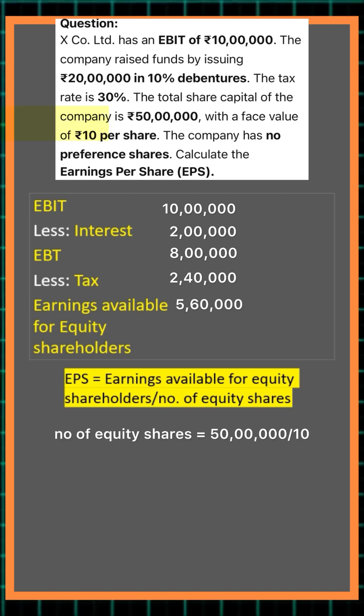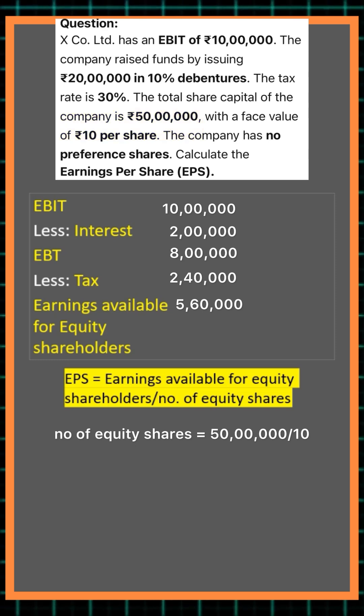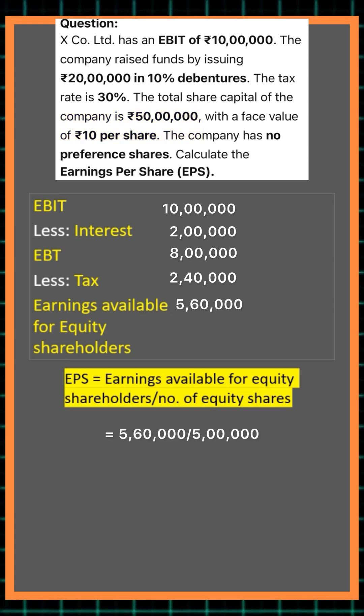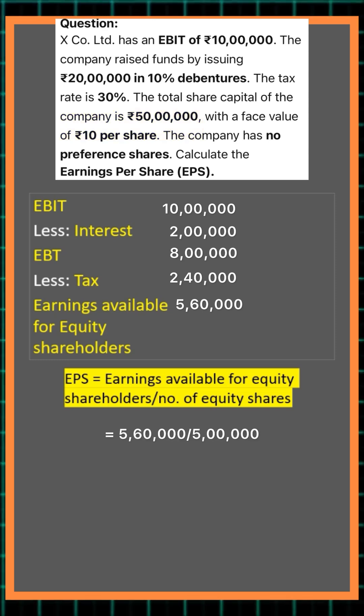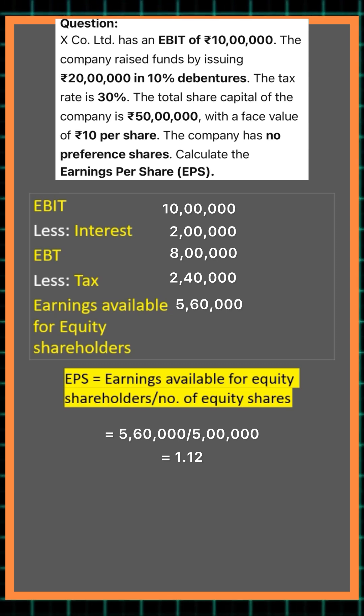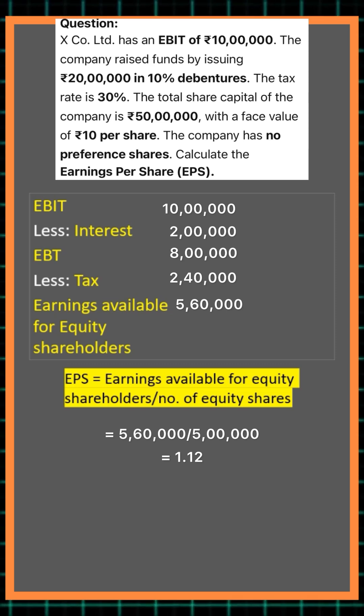So earnings per share is equal to 5 lakh 60,000 divided by 5 lakh, that is rupees 1.12 per share.